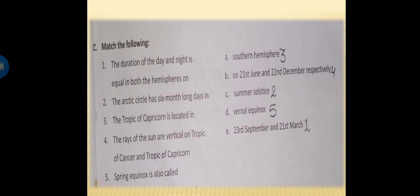Now come to C part, match the column. The duration of the day and night is equal in both the hemisphere, equal in both the hemisphere on when? 23rd September and 21st of March. Now come to question number 2. The Arctic Circle has 6 month long days in summer solstice.